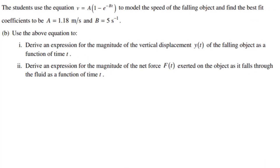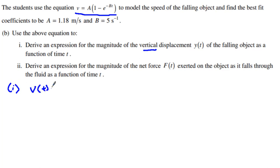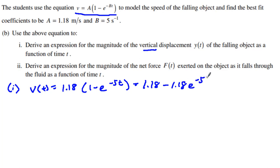So let's get to the real calculus part of this. We're taking a look at B1 and B2. They give us a nonlinear function, along with the constants A and B. And remember, this is a velocity function — we want to know the vertical displacement. The velocity as a function of time equals 1.18 times (1 − e^(−5t)). I can distribute: 1.18 minus 1.18 e^(−5t).